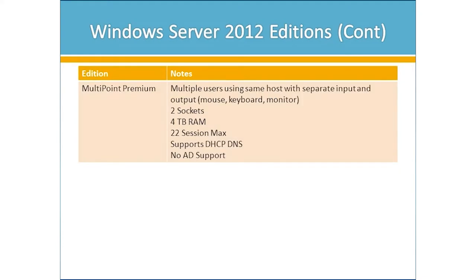We have two storage editions: Workgroup and Standard. Workgroup limits the number of user connections and means no Active Directory. Standard edition allows domain membership and can be licensed per two sockets. We also have Multipoint, which means many users using the same host with separate input and output — mouse, keyboard, and monitor. It has a 12-session maximum and limited infrastructure roles or Active Directory support. Multipoint Premium allows more RAM, more sessions, and a little more network infrastructure.